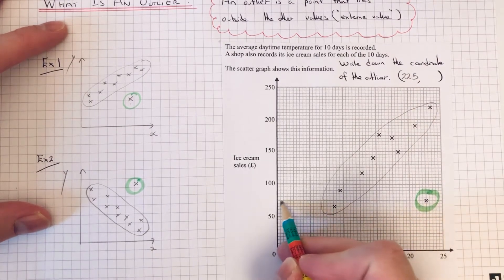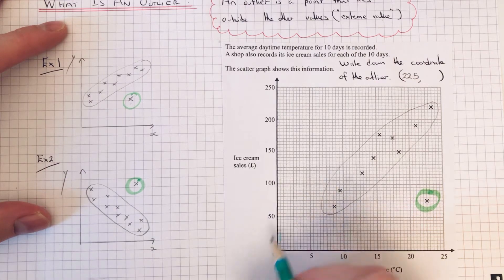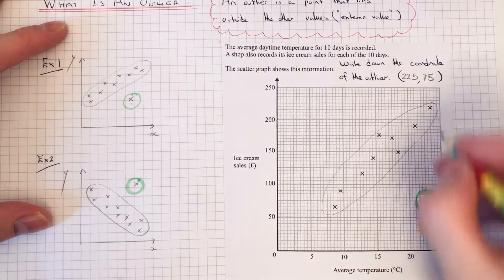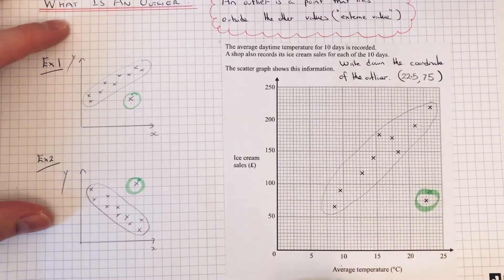And the y-coordinate is halfway between 50 and 100, so that would be 75. And that is our final answer.